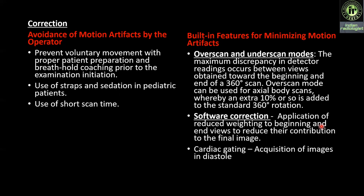There are some built-in features to minimize motion artifacts. First is overscan and underscan mode: the maximum discrepancy in detector readings occurs between views obtained towards the beginning and end of a 360 degree scan. Overscan mode can be used for actual volume scans whereby an extra 10% or so is added to the standard 360 degree rotation. Software correction: application of reduced weighting to beginning and end views to reduce their contribution to the final image. In cardiac gating, acquisition of images in diastole.